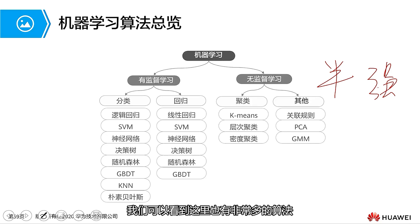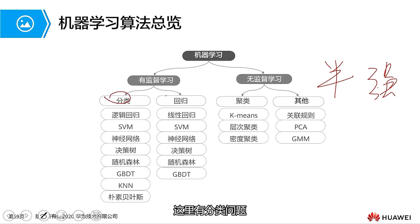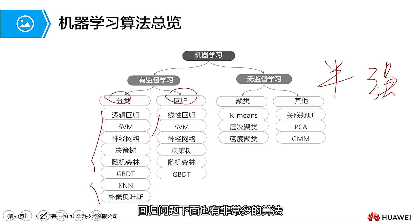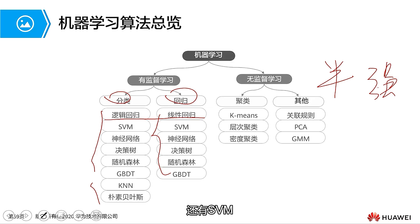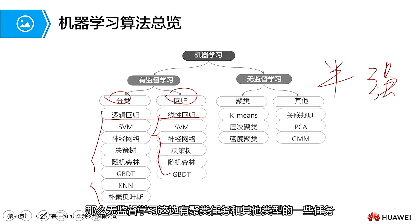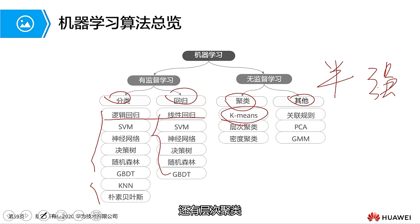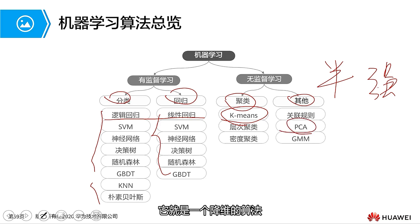Let me introduce everyone. We can see there are also a lot of algorithms here. In supervised learning, there are classification problems and regression problems. Under the classification problem, there are a wide variety of algorithms. There are also many algorithms under regression. The most common ones we may encounter are logistic regression and linear regression. There are also SVM, decision trees, and so on. Moving on to unsupervised learning, there are clustering tasks and other types of tasks. In clustering, the most common method we use is K-means.